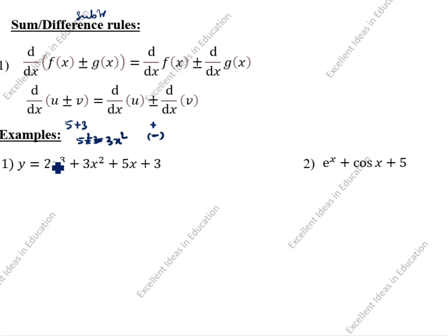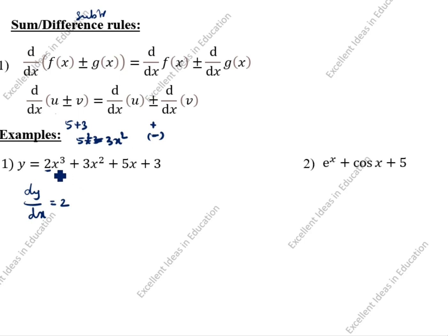Now we will do some examples. We will differentiate this equation. dy/dx: 2 is the constant term, keep it as is. x³ using n·x^(n-1) — n is 3, so 3x^(3-1) = 3x². Into 2: that gives 2·3x².